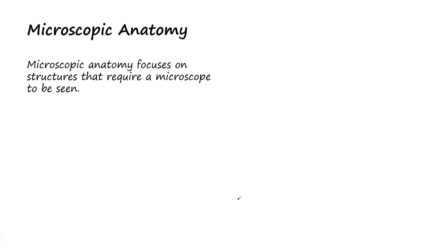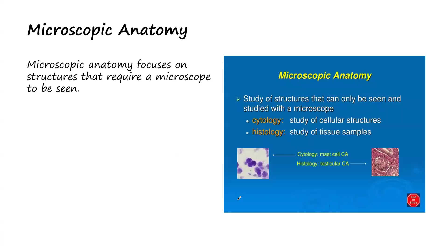The next branch is microscopic anatomy. Microscopic anatomy focuses on structures that require a microscope to be seen. There are some organs and structures that you cannot see with the naked eye except when you use a microscope. Those structures that require the use of a microscope fall under microscopic anatomy.